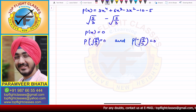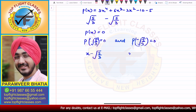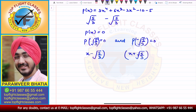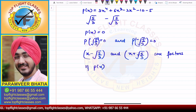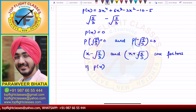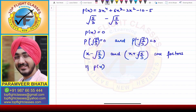Since √(5/3) and -√(5/3) are zeros of the polynomial, I can say that (x - √(5/3)) and (x + √(5/3)) are factors of p(x). Because these are the zeros of the polynomial, these two expressions are factors of p(x).